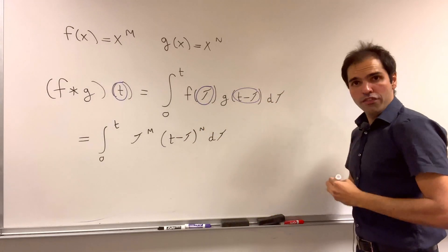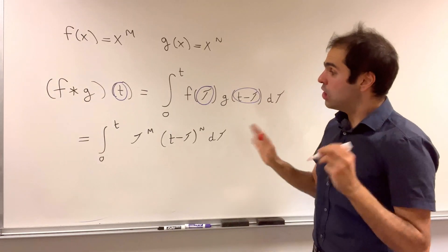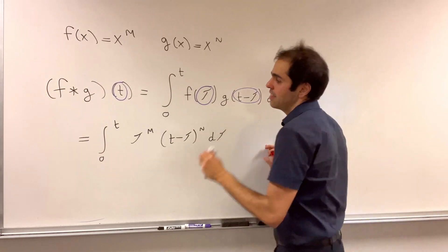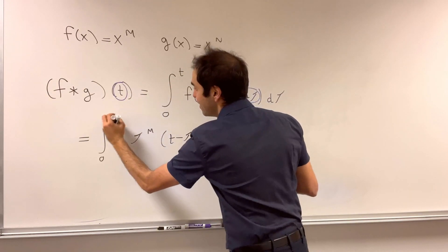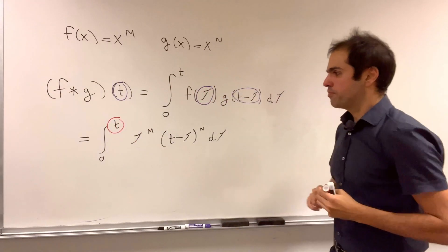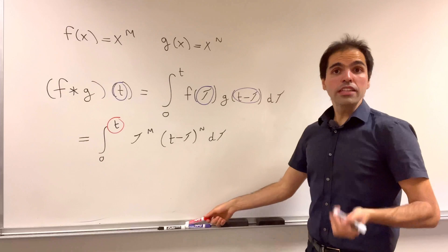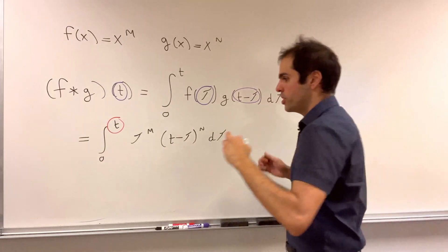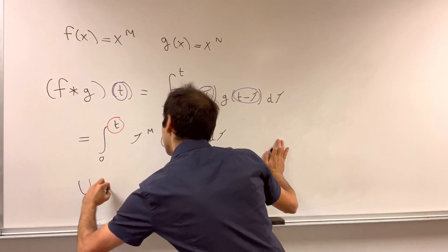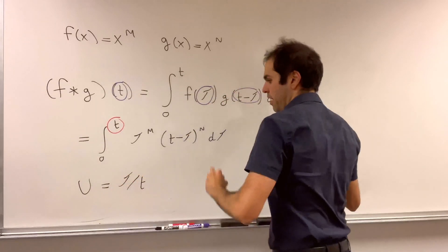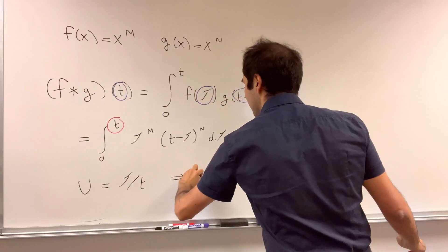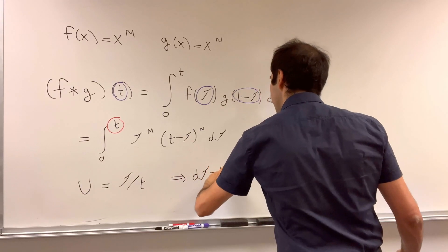And if you look back at the first integral, notice the main difference is that the original one had 1, but here we have a t, which now leads to the following u substitution, let u be tau over t, and then you can also check that d tau is t du.